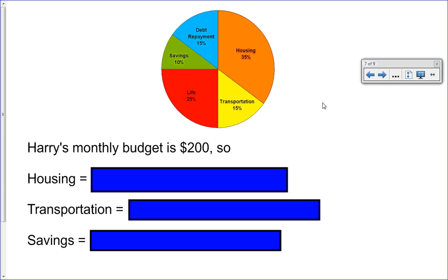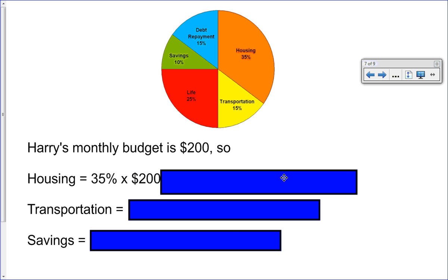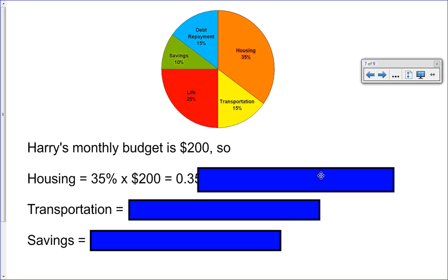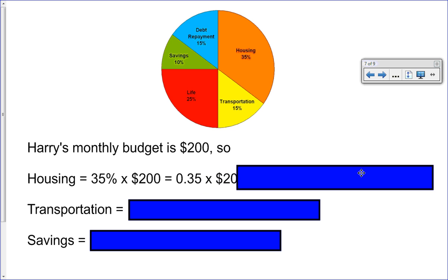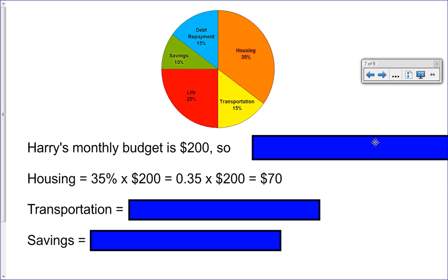This is where one of the concepts that we learned in our previous unit on percents is really going to help us here. Harry's monthly budget again is $200, so in order to calculate the amount he spends on housing, we're going to take 35 percent and multiply that by 200. Of course we must first change 35 percent into decimal 0.35, multiply that by 200, and that gives us a total of $70.